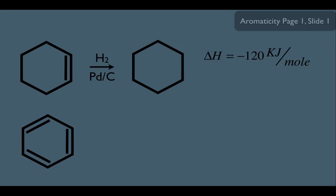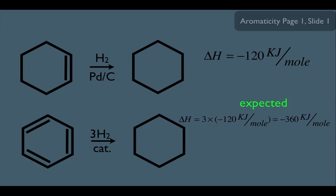But notice, let's say we took this molecule right here, and we ran it through the same reaction. Notice in this molecule it has three double bonds, so we would need three H2s in a catalyst. If we were to look at the change in enthalpy of this reaction, the expected should be this: we should get three times negative 120 kilojoules per mole, simply because this molecule has three double bonds, and the top one just has one double bond. And three times negative 120 happens to be negative 360 kilojoules per mole.